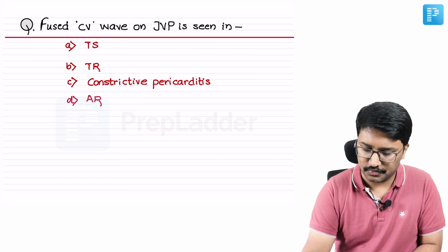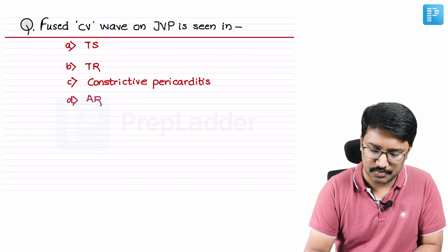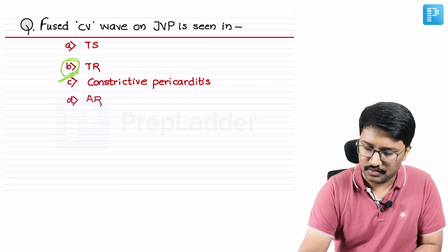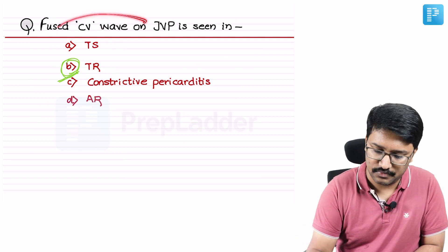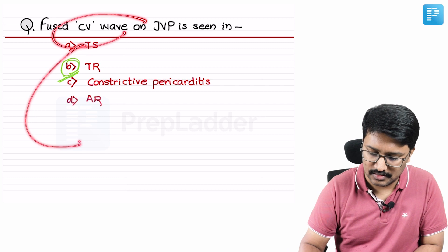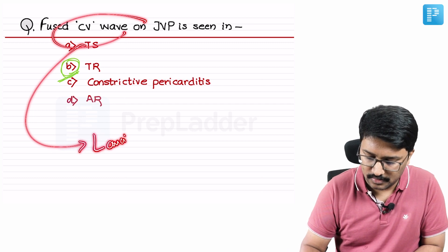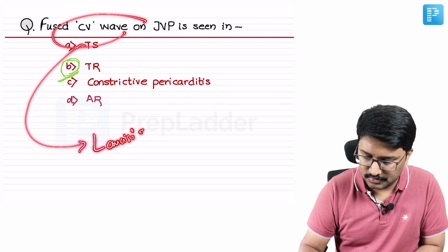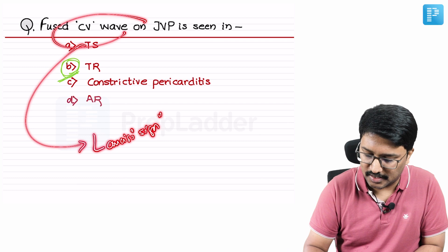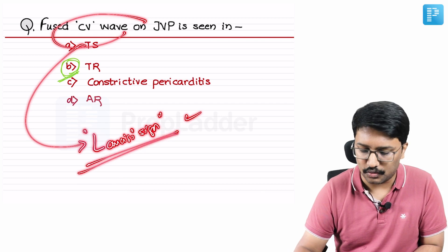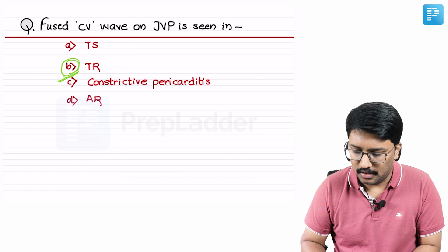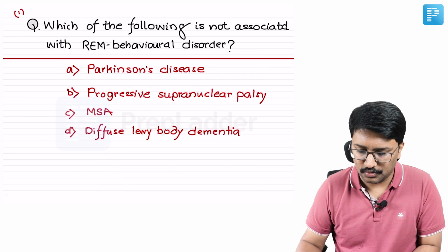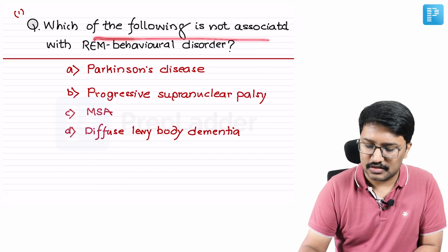The right answer is tricuspid regurgitation. This fused CV wave sign is also known as the Lancisi sign. So in cardiology papers when they ask about Lancisi sign, the answer is tricuspid regurgitation.